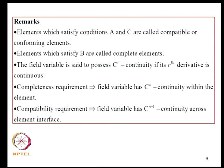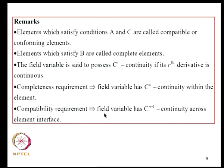Elements satisfying conditions A and C are called compatible or conforming elements. Elements satisfying condition B are called complete elements. The field variable is said to possess C-R continuity if its R-th derivative is continuous. The completeness requirement implies C-N continuity within the element, and compatibility implies C-(N-1) continuity across element interfaces.